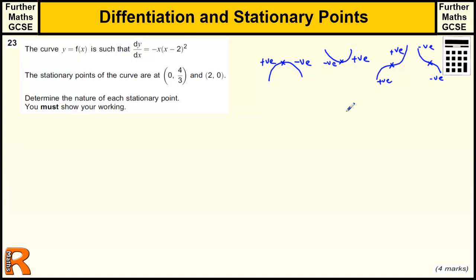To determine the nature of the stationary points, we can do an analysis where we look at where the stationary point is, then look at a point to the left and a point to the right fairly close, to see whether the gradients are positive-negative, positive-positive, or negative-negative, and from that decide which type of stationary point it is.